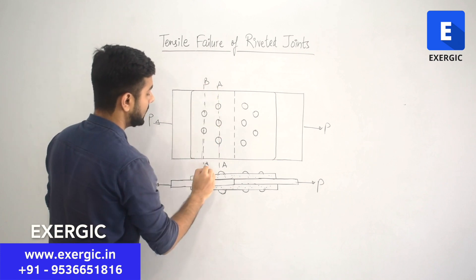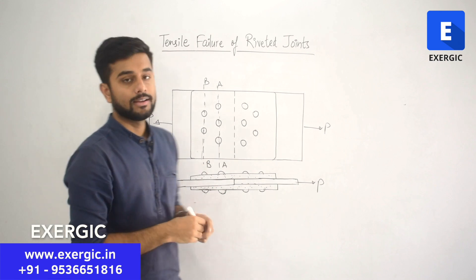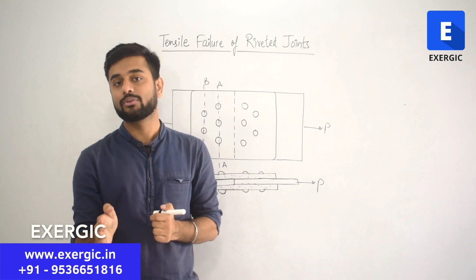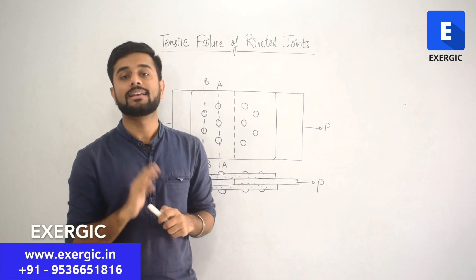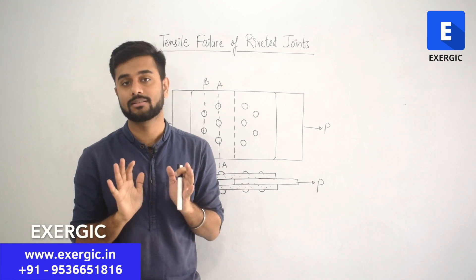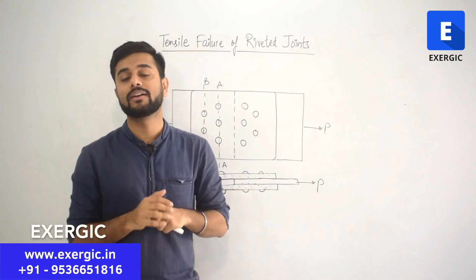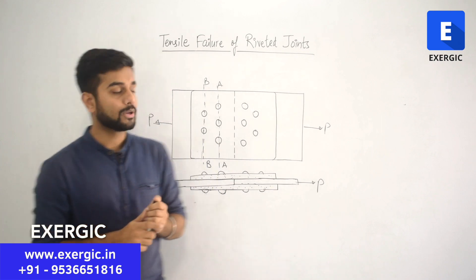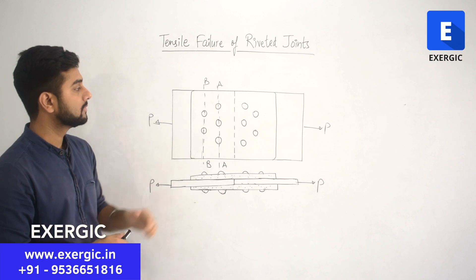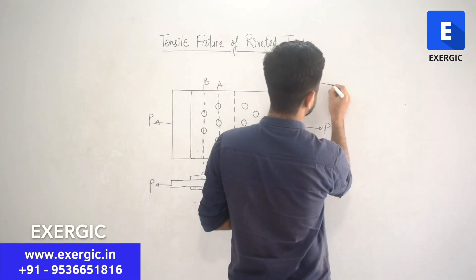As I have already told you, it's very important in tensile failure to determine which section we are going to decide for tensile strength. Because each section may have different tensile strength, may have different failure in case of tension. Because if you look at section AA, it has 3 rivet holes. It is going to look like this.